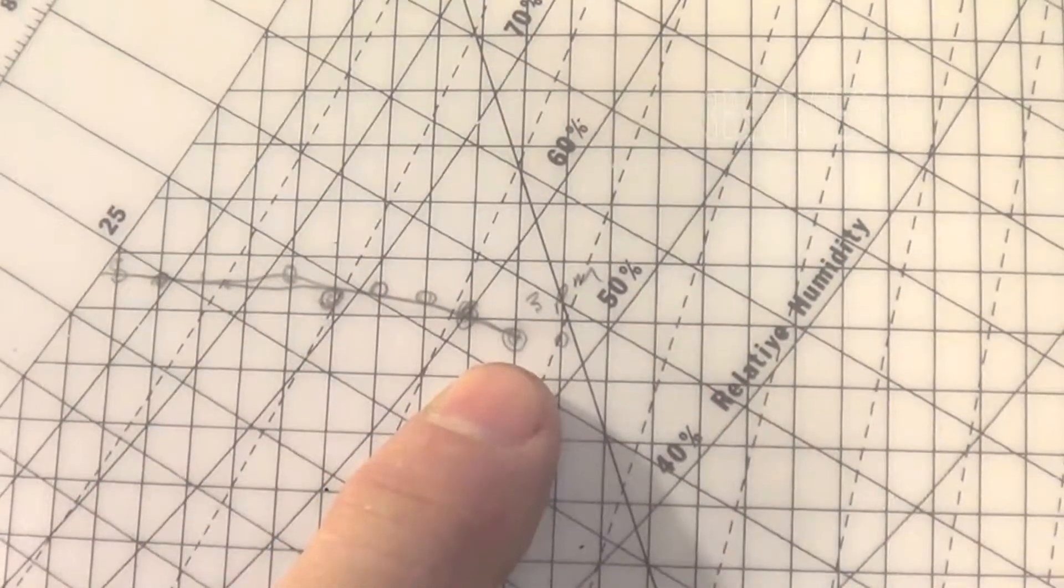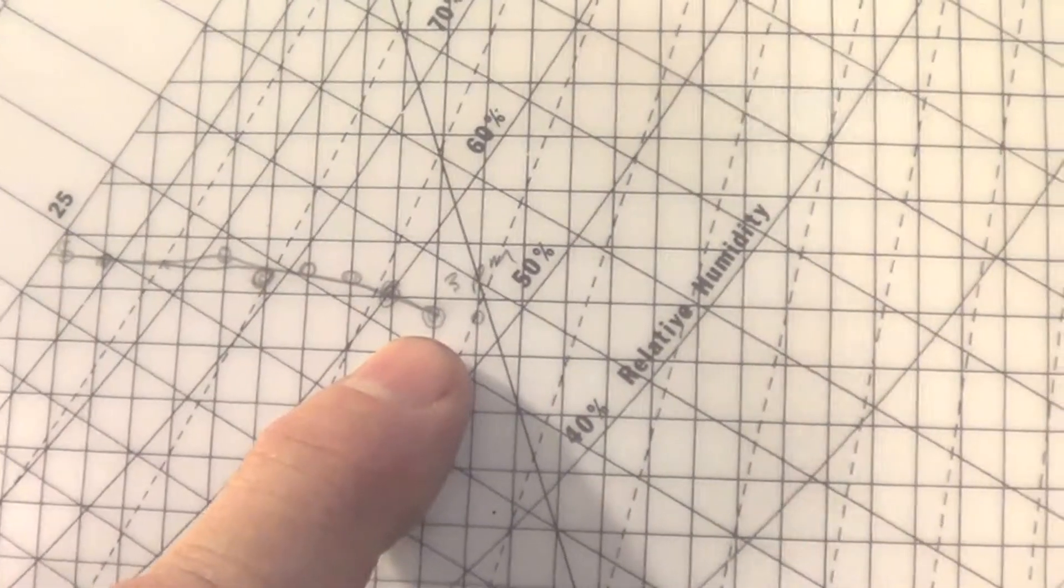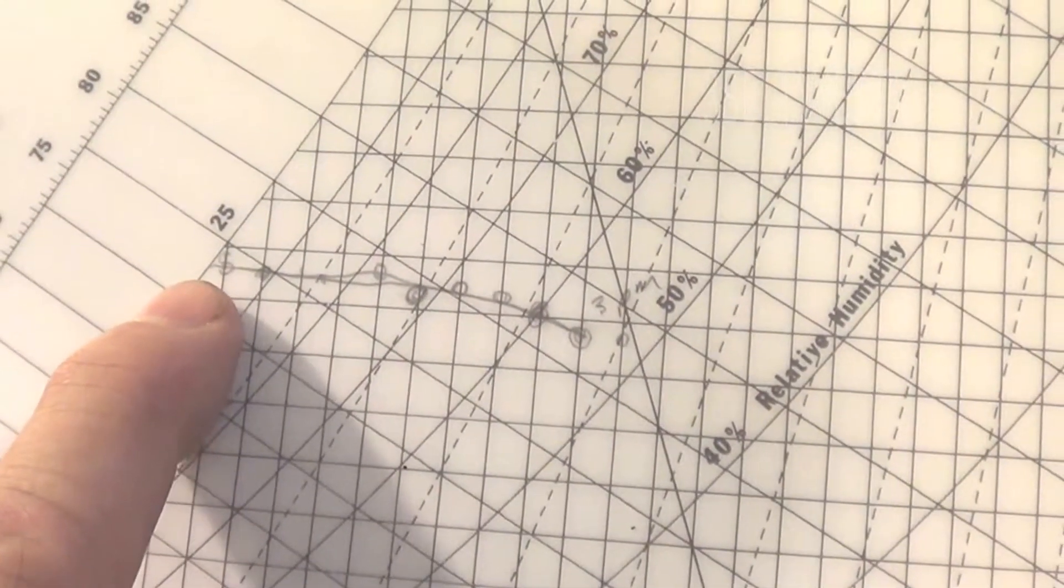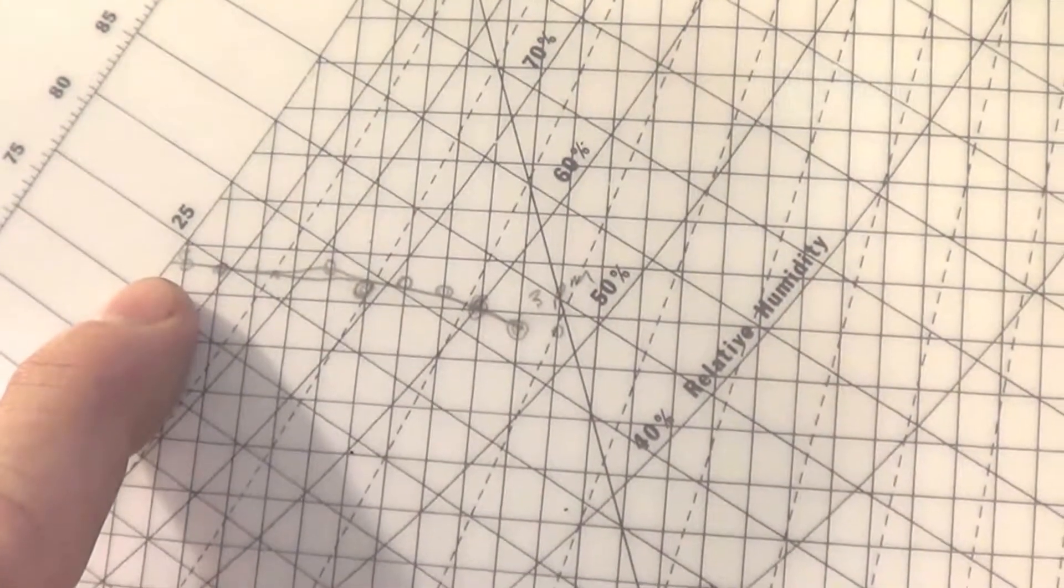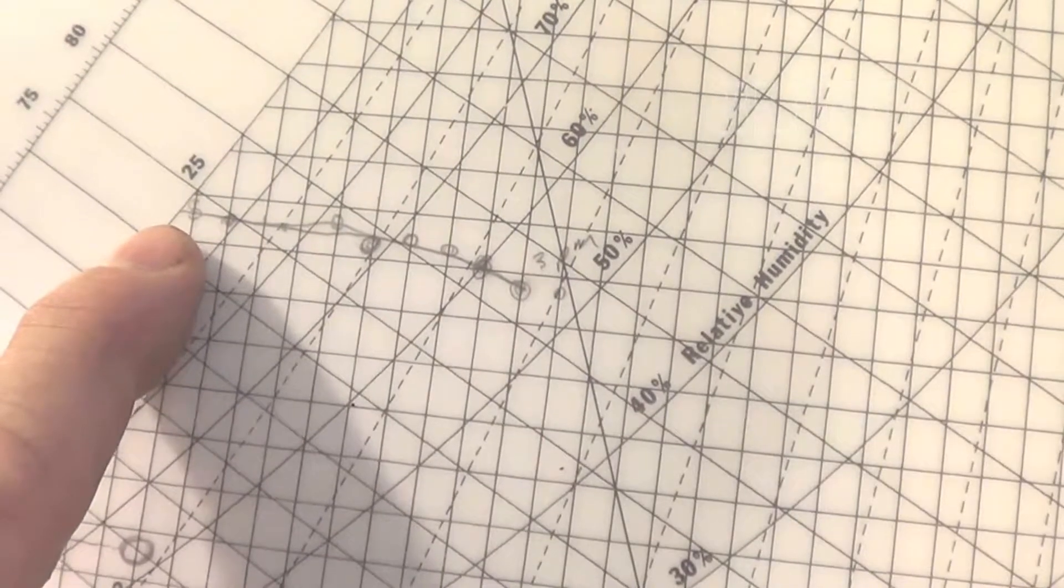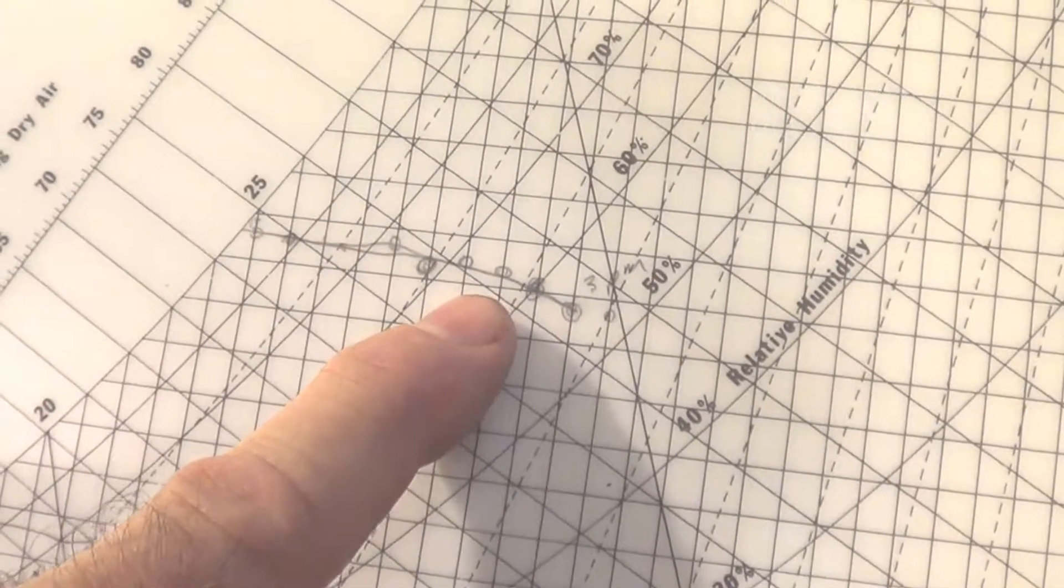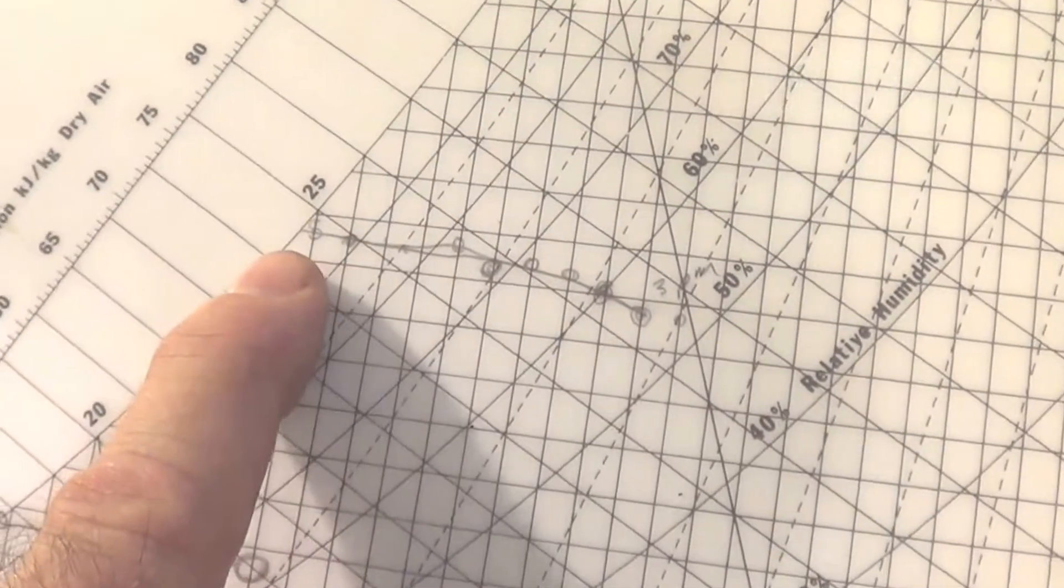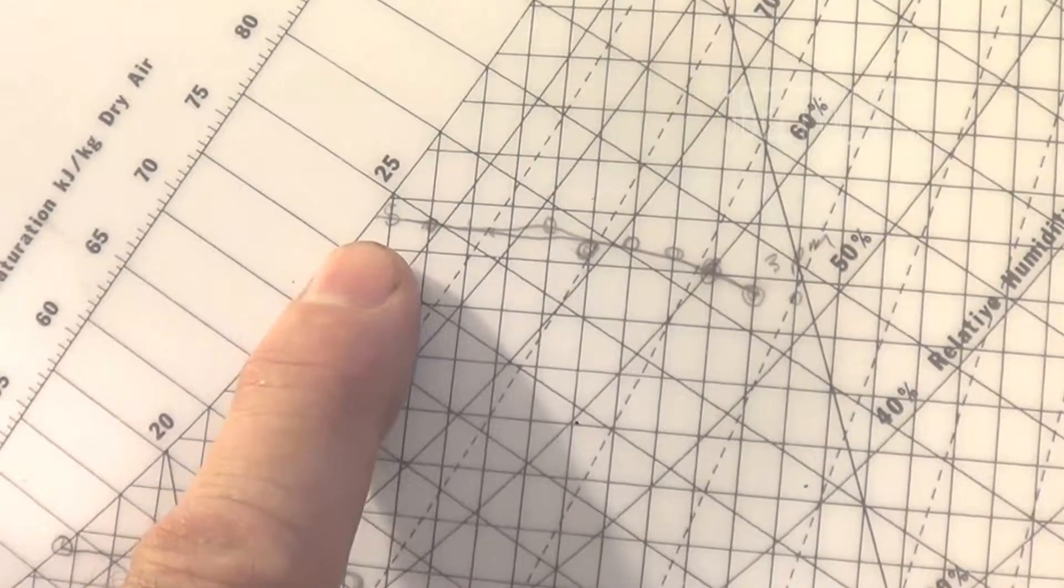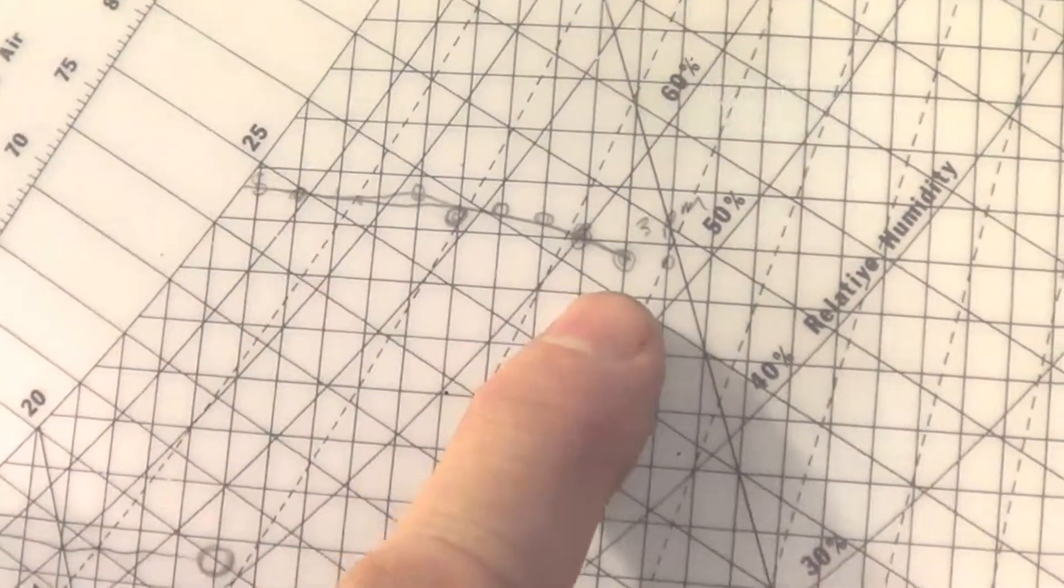It peaked over here at 35 degrees C and 54 percent humidity. In this process, the entire day the amount of moisture content was roughly constant because air is heating up, air moisture just hangs around, the air humidity drops. So it was just about saturated early in the morning, 25 degrees, 97 percent humidity.